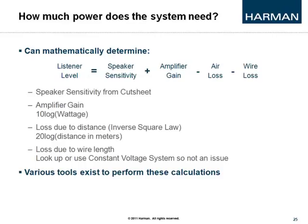A decibel is a ratio of two numbers — a way of expressing the relationship between two values, such as distance or applied power. To mathematically determine how much power a system needs, you start with the desired listener level, then factor in speaker sensitivity from the spec sheet, plus amplifier gain expressed as 10 times the log of the wattage, minus the loss due to the inverse square law — which is 20 times the log of the distance in meters, since speakers are rated at 1 watt at 1 meter. You also subtract the loss due to wire length.